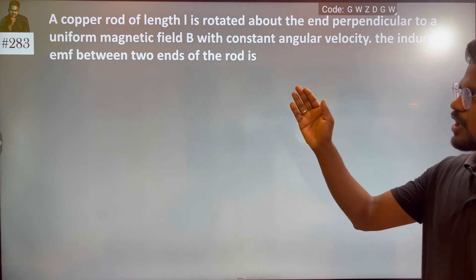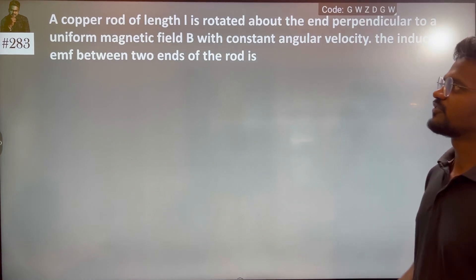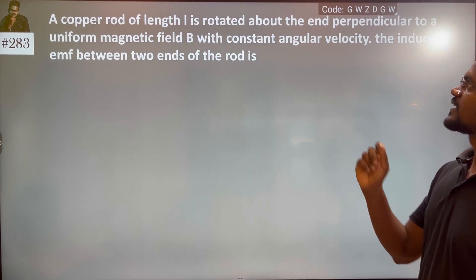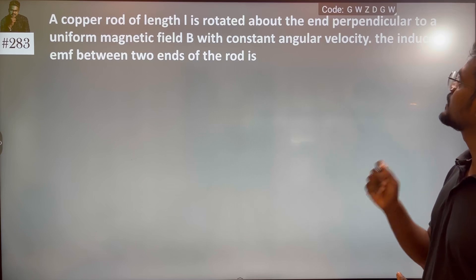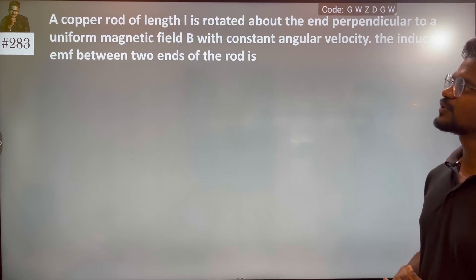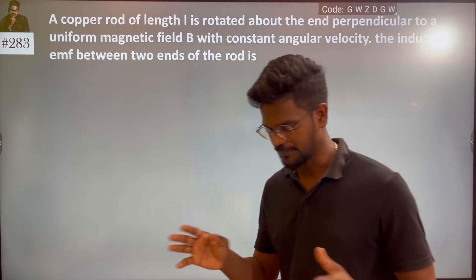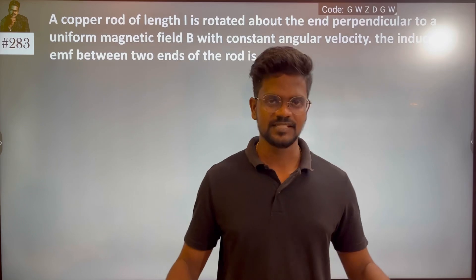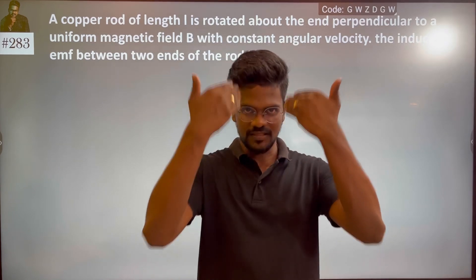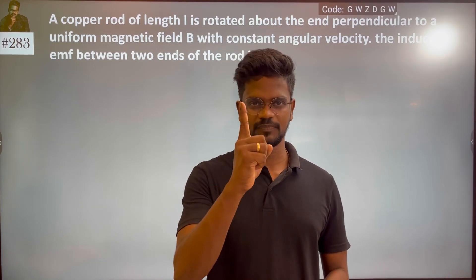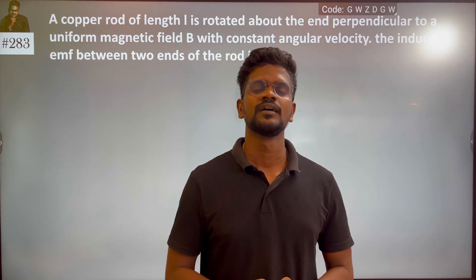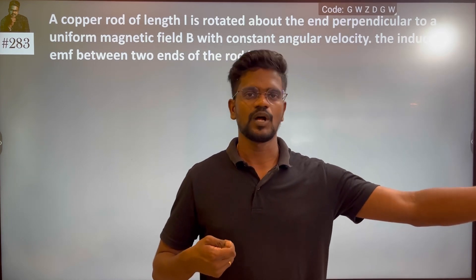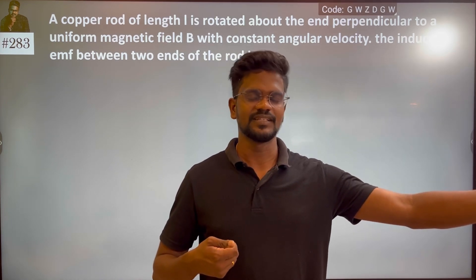A copper rod of length L is rotated about one end, perpendicular to a uniform magnetic field. Imagine: I am representing the magnetic field. If I am the rod, the length is L.